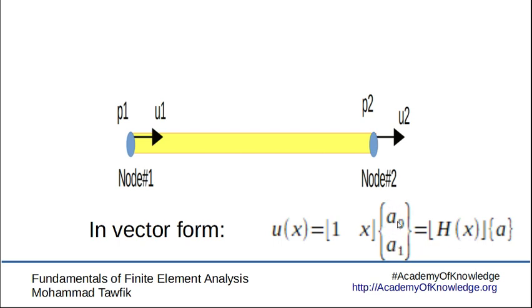While the column vector we have here, which is the column of the unknown coefficients or the generalized coordinates, we will just call it the a vector.